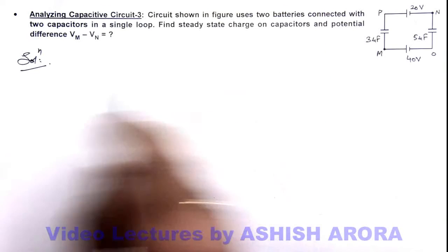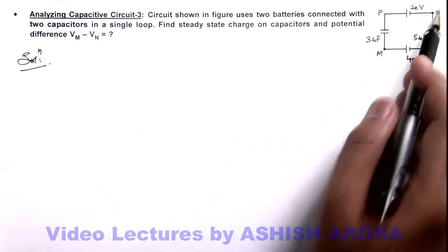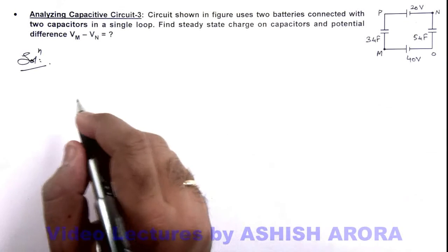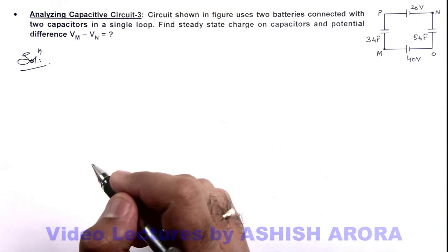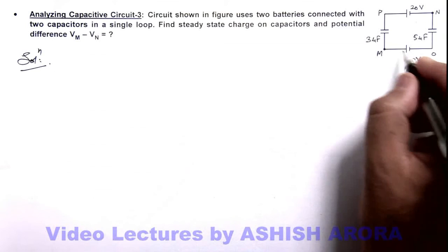And potential difference across the points M and N. So we solve it again by distribution of potentials, for which we can take on the right side of the battery of 40 volts, say the potential is zero at point O.